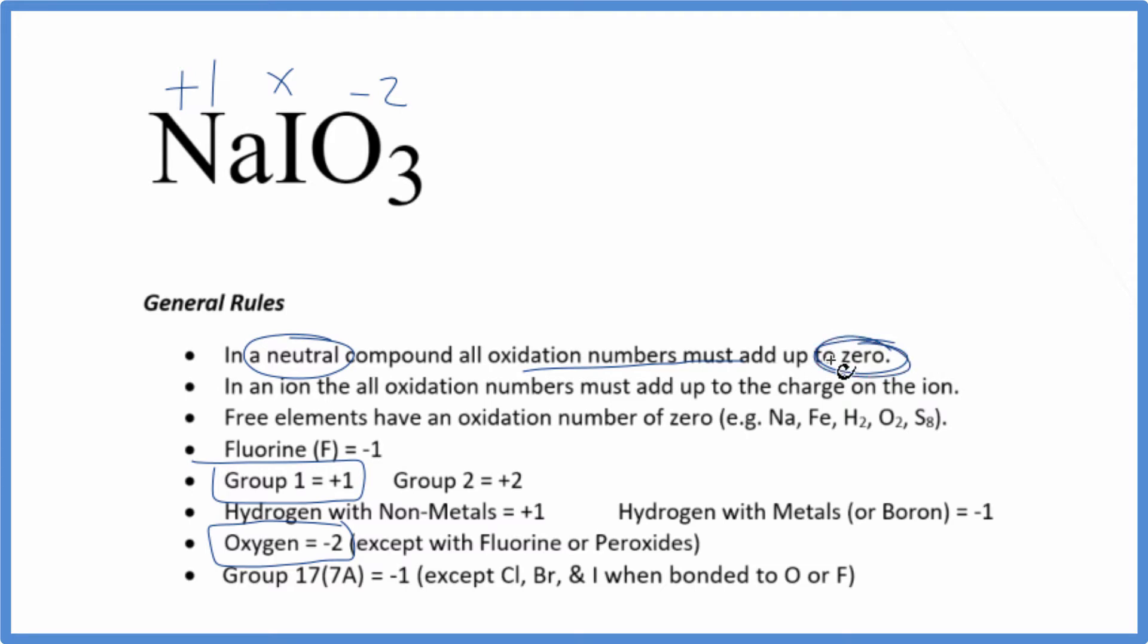Because all of this equals zero, we can set up an equation: 1 plus X (that's the iodine) plus 3 times -2, so -6, equals 0. X minus 5 equals 0, so X equals positive 5.